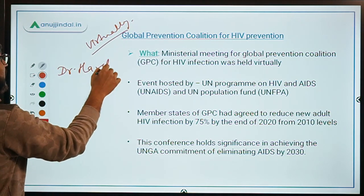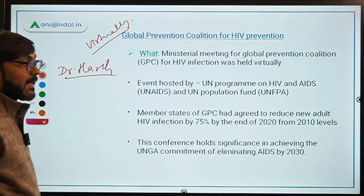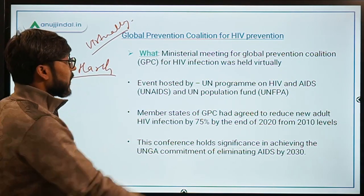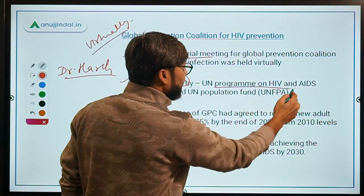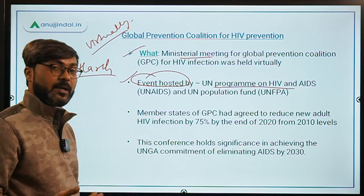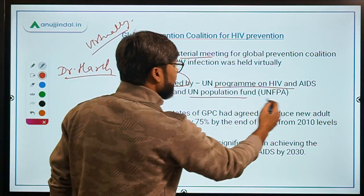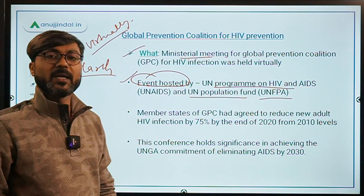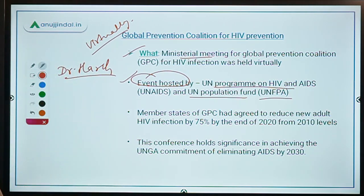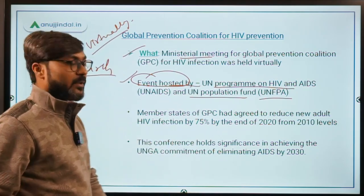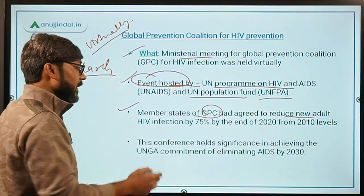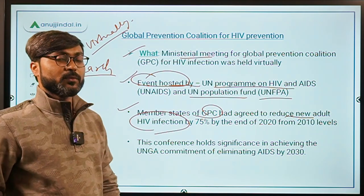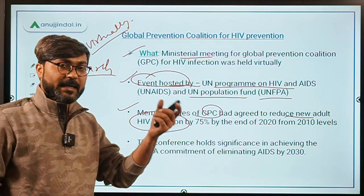Dr. Harsh Vardhan is the Minister of Health and Family Welfare, as well as the Minister of Science and Technology. This ministerial meeting was hosted by UN AIDS (United Nations Programme on HIV/AIDS) and UNFPA (United Nations Population Fund). Member states of this coalition agreed to reduce new adult HIV infections by 75% by the end of 2020, with respect to 2010 levels.